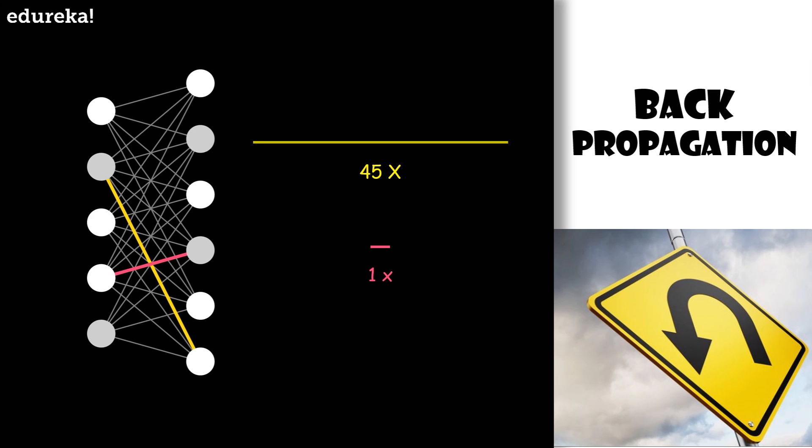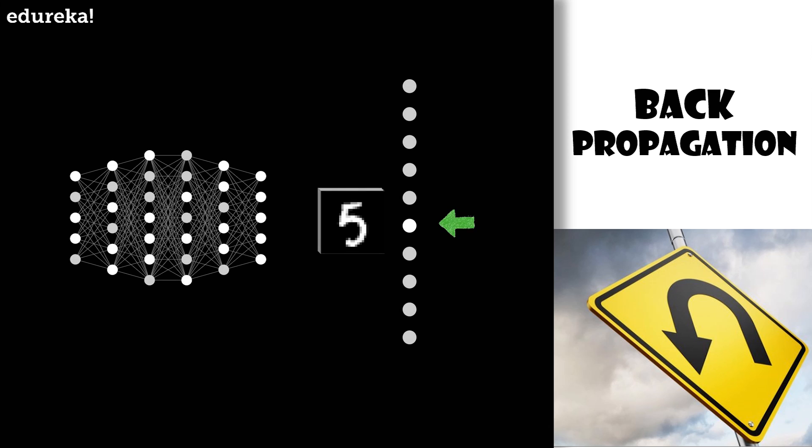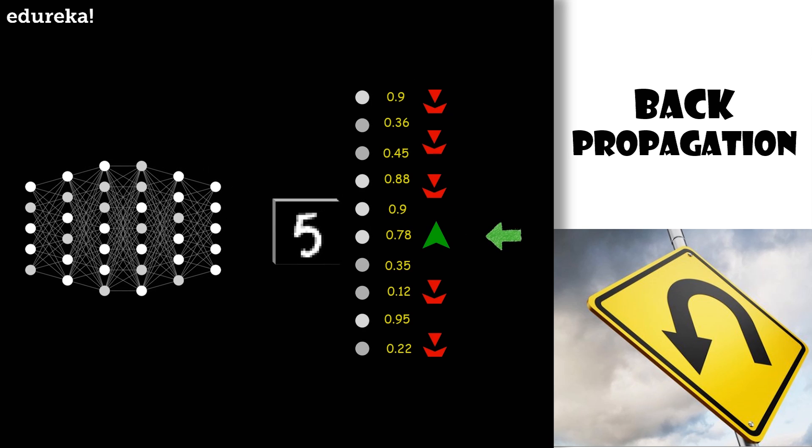The cost involves averaging a certain cost over all the tens of thousands of training examples. For now we're going to focus our attention on one single example. So let's take an example of the digit 5. What effect should this one training example have on how the weights and biases get adjusted? Let's say we are at a point where the network is not well trained, so the activations in the output are going to be pretty random. We can't directly change those activations.